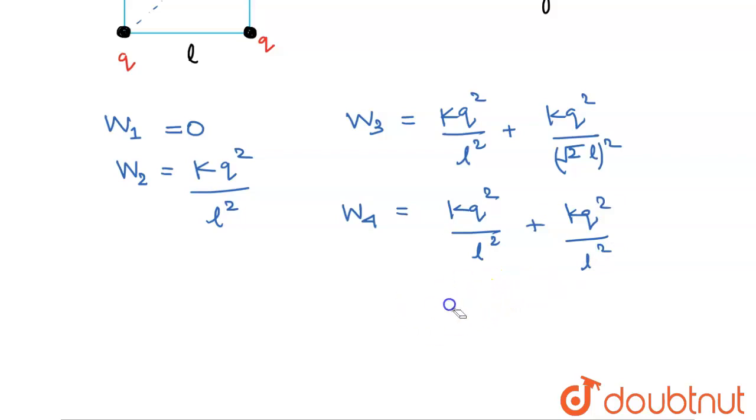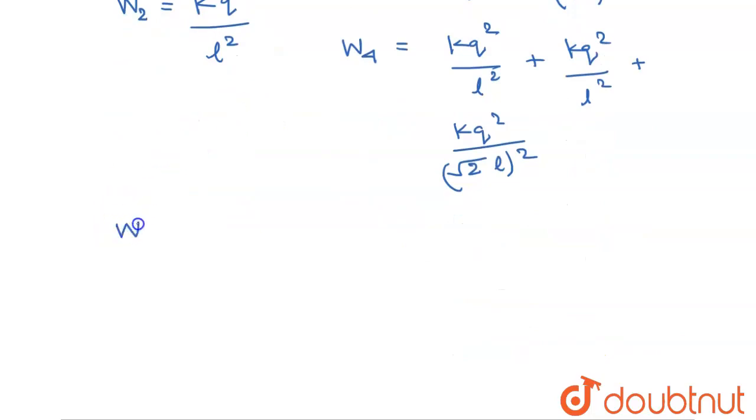So now the net work done, calling it as W, that is W1 plus W2 plus W3 plus W4, this will be equal to 5 k q squared over L squared. After simplifying you will get this. Okay, that is the potential energy of the system. Just write it down, that is the potential energy.